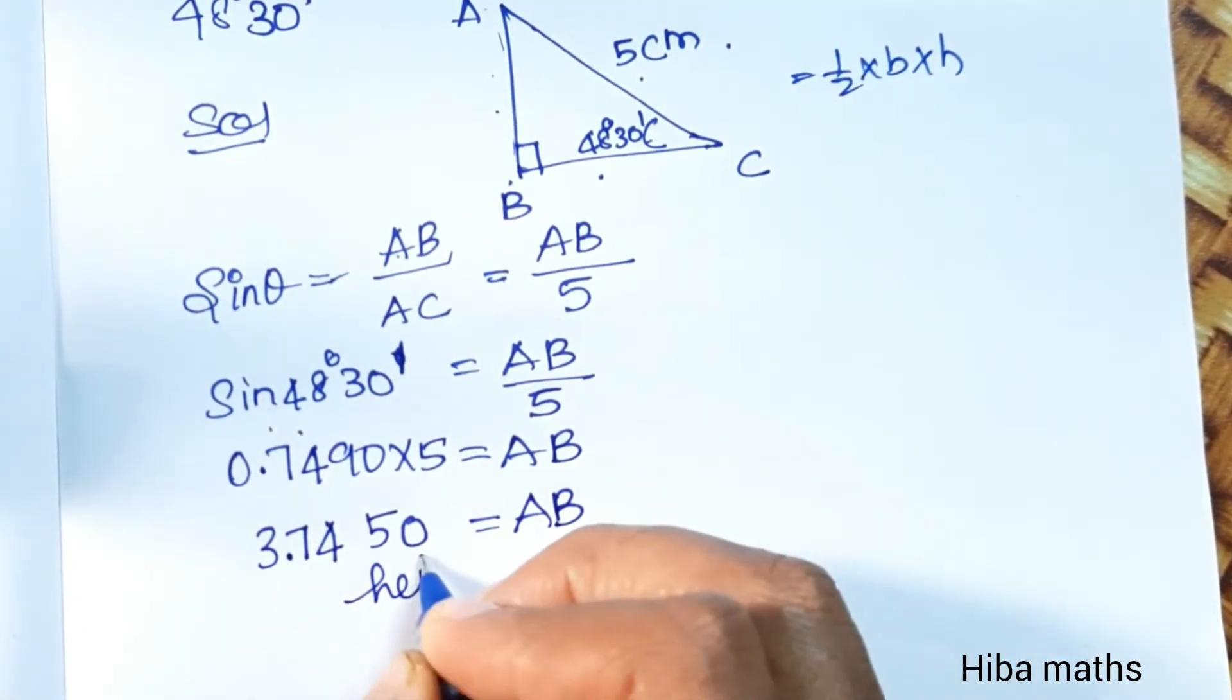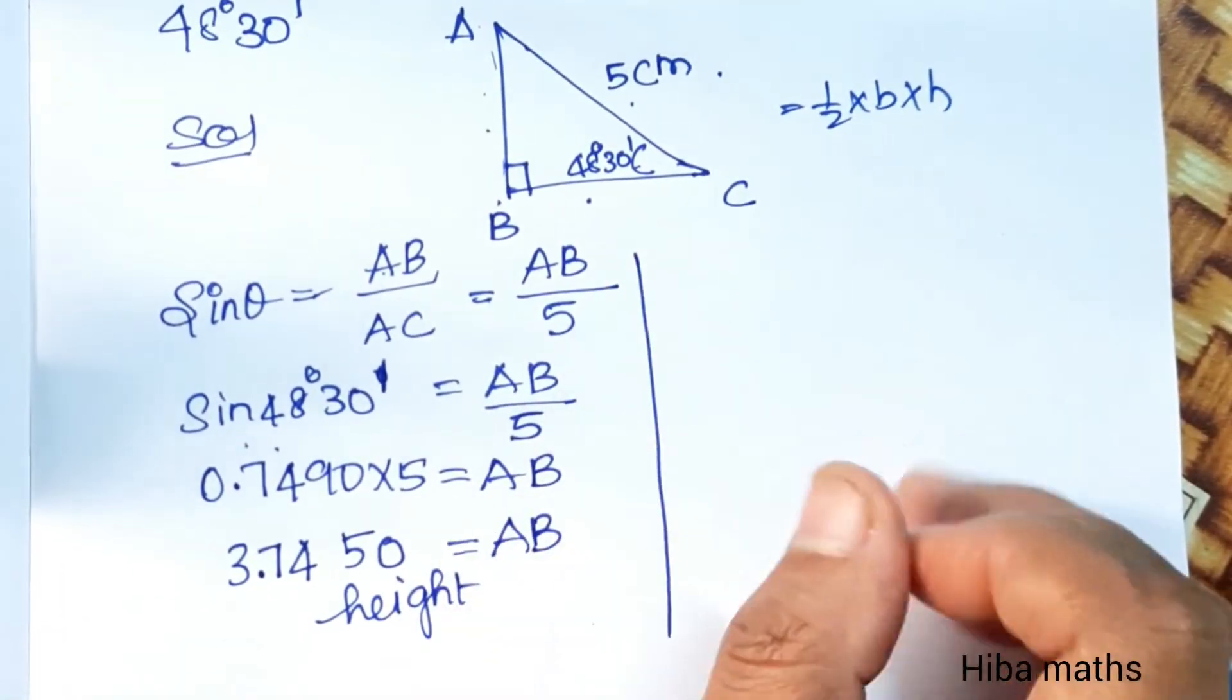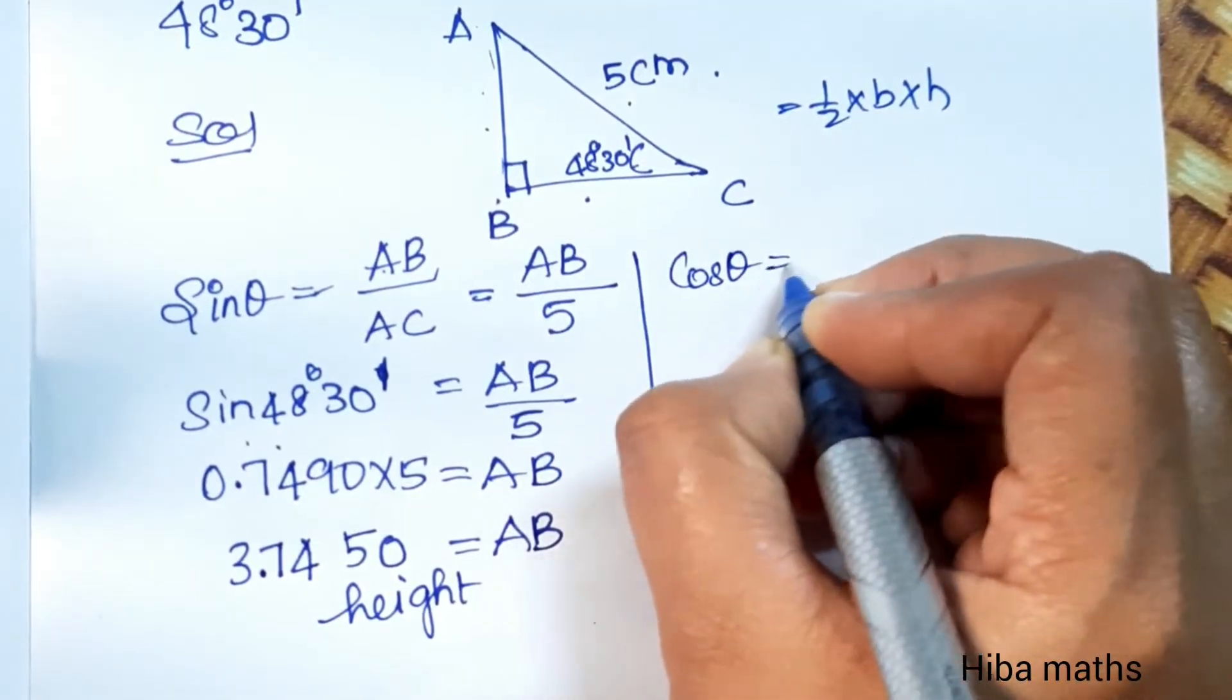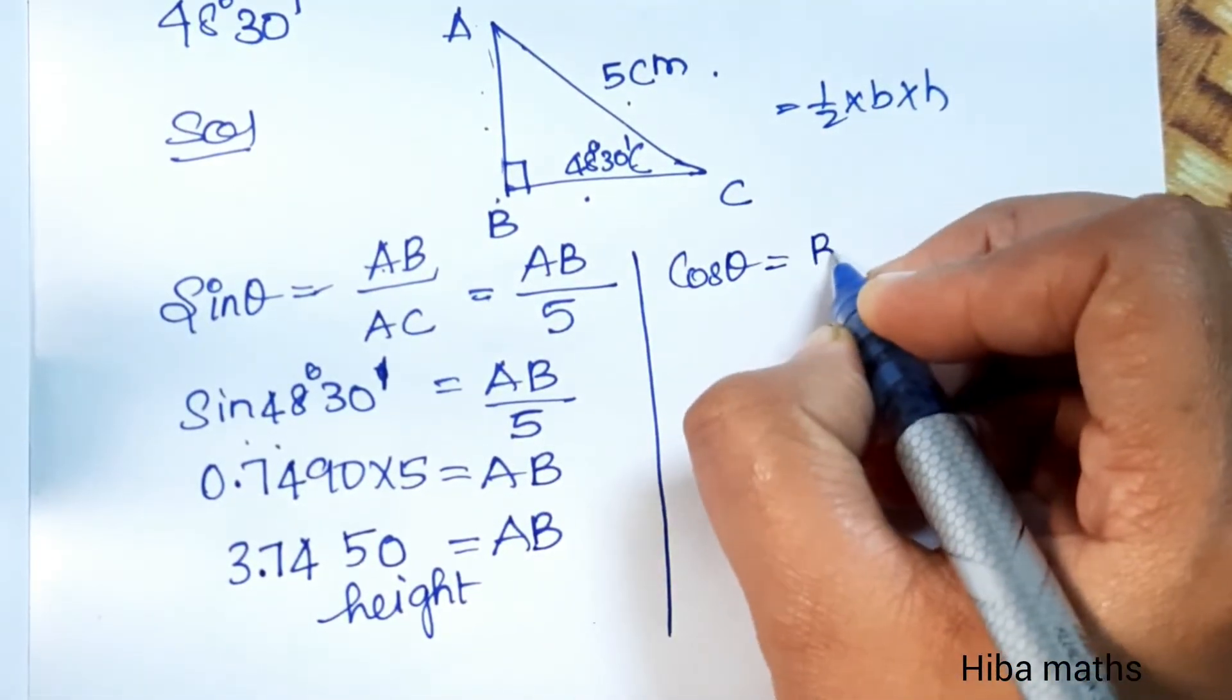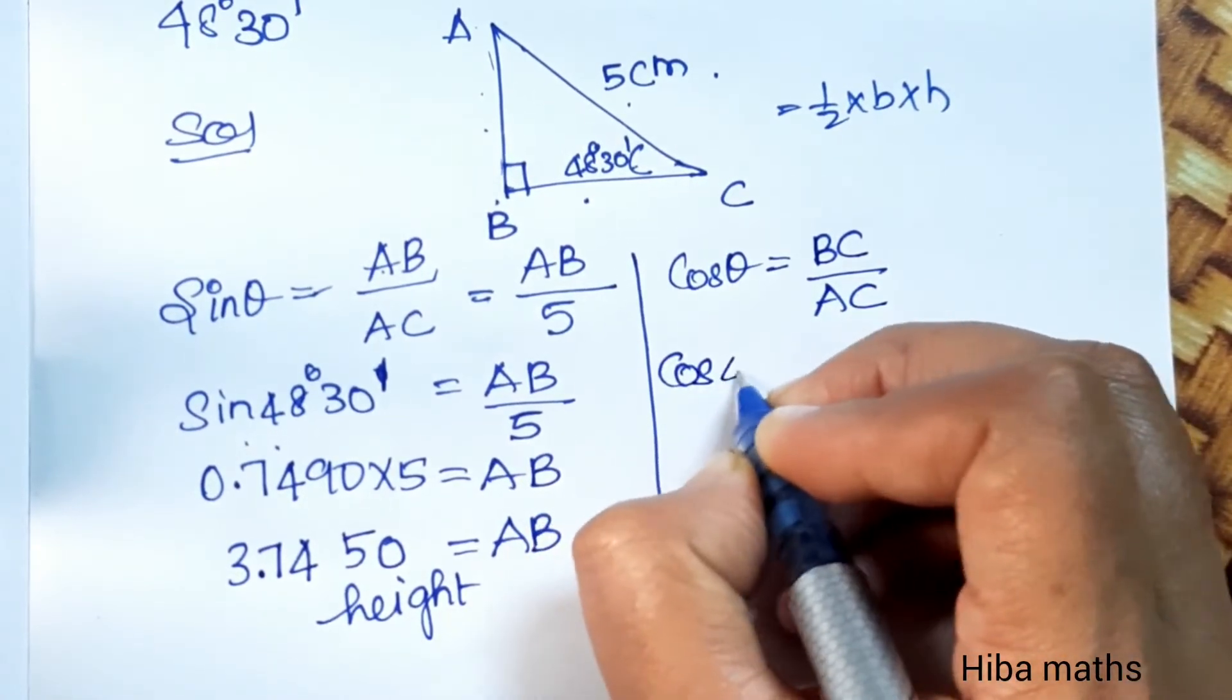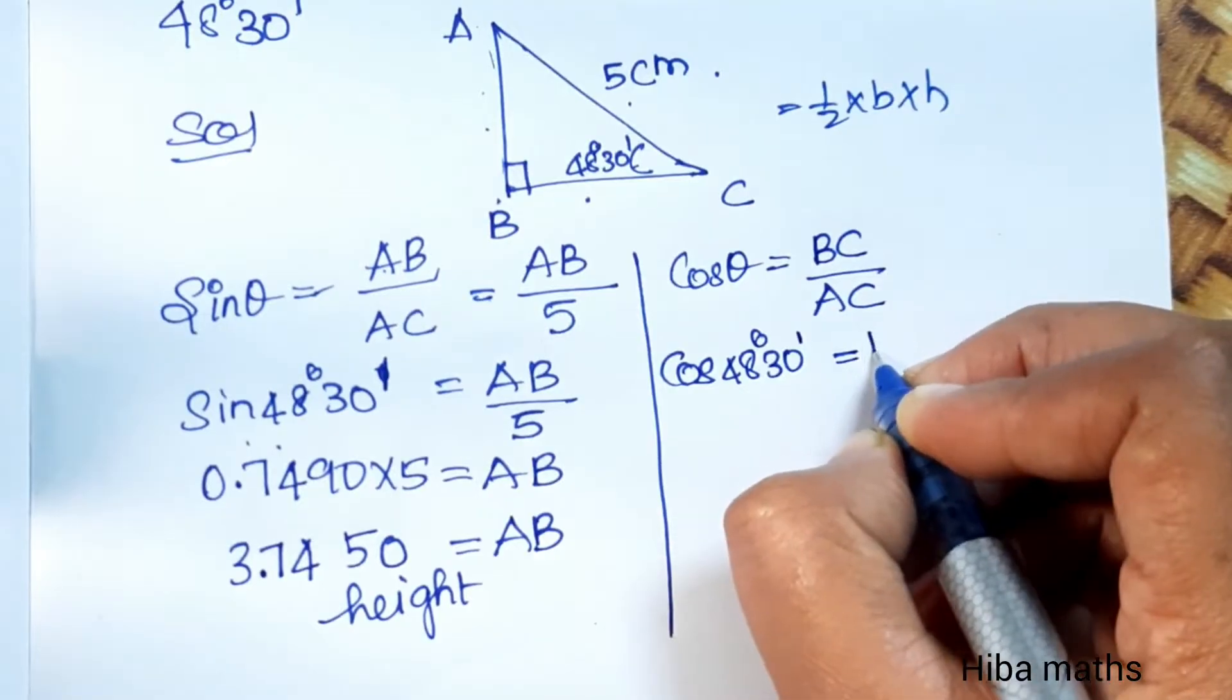You can see the base value. Base value is adjacent by hypotenuse. So cos theta equals adjacent BC by AC. Cos 48 degrees 30 minutes equals BC by 5.